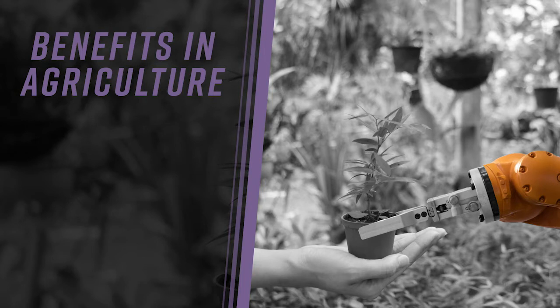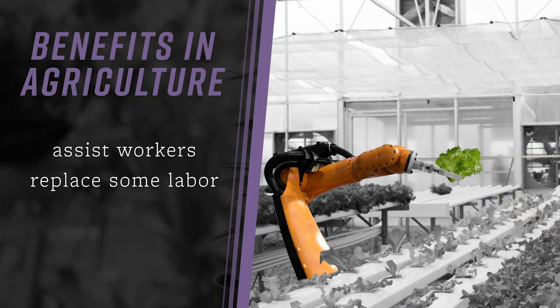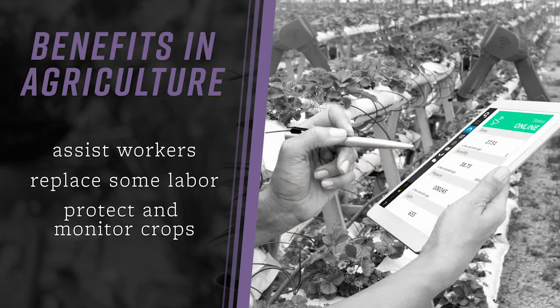For example, different pieces of robotic technology can be used to assist workers, replace some labor, and protect and monitor crops.